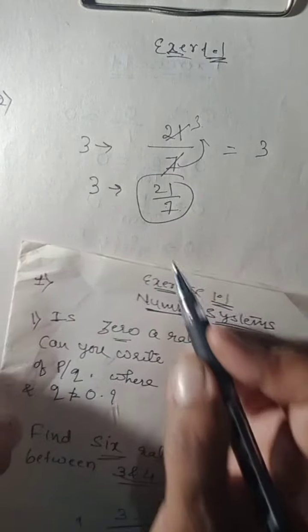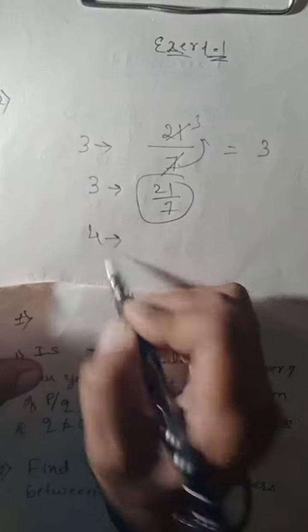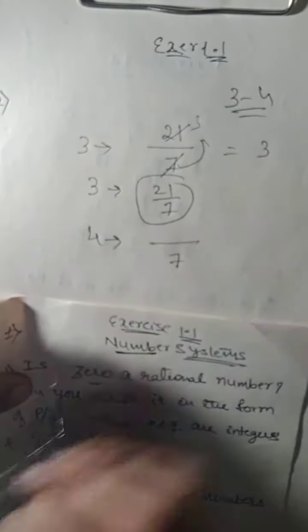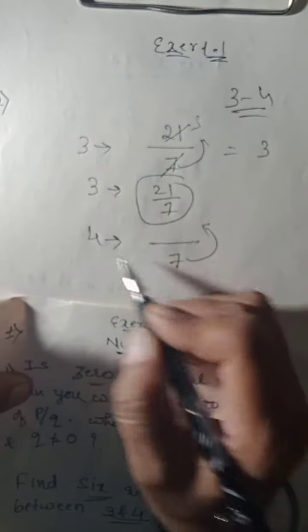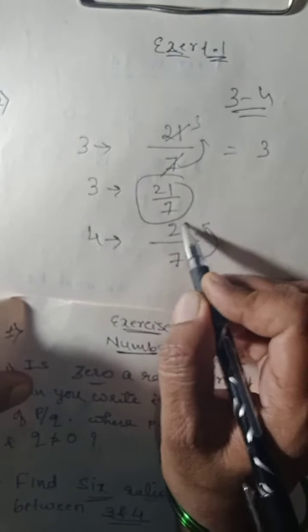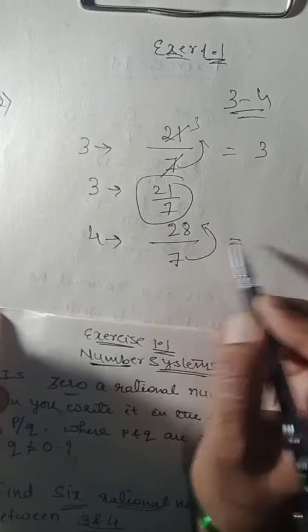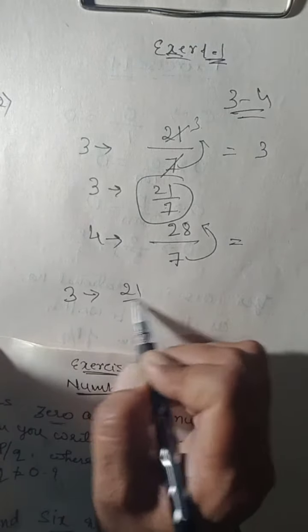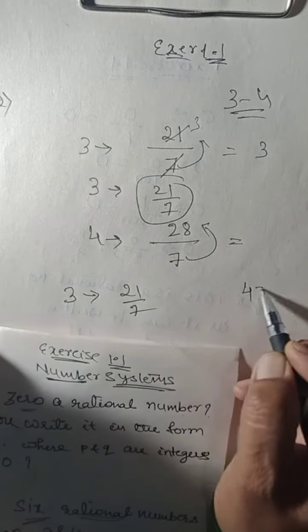This is my first number, initial number. Then I have 4. Between 3 and 4. Then 4, I am taking 7 in the denominator. 7 times 4 is 28. So 4 can be written as 28 upon 7.